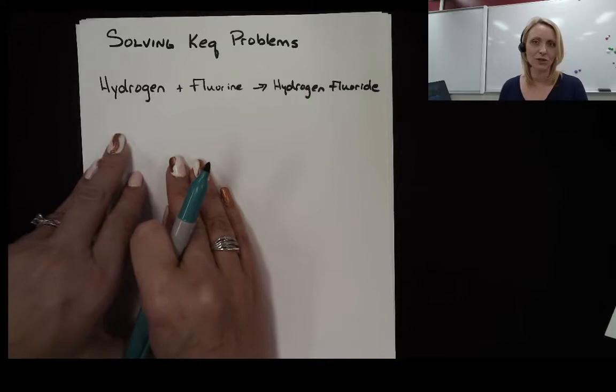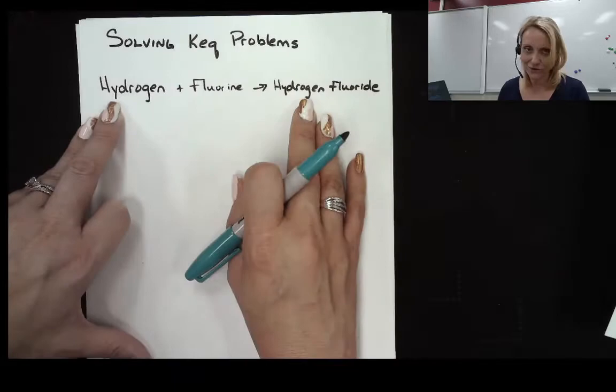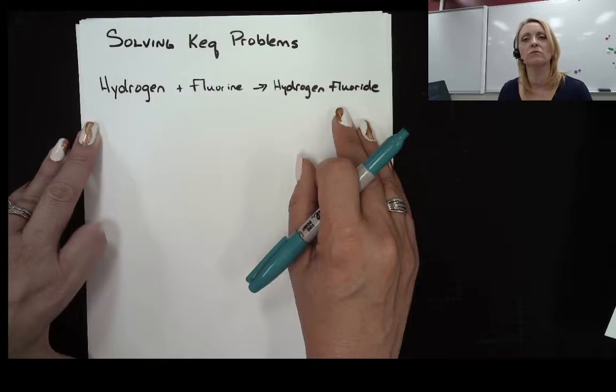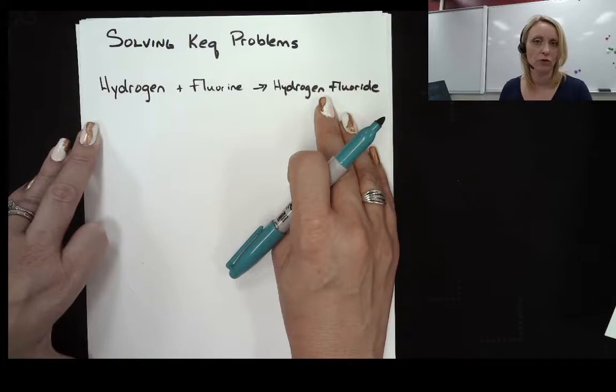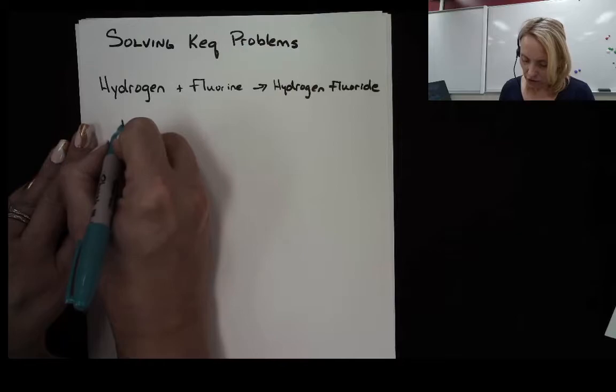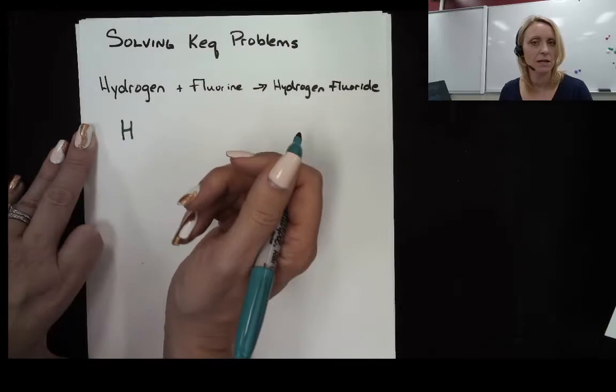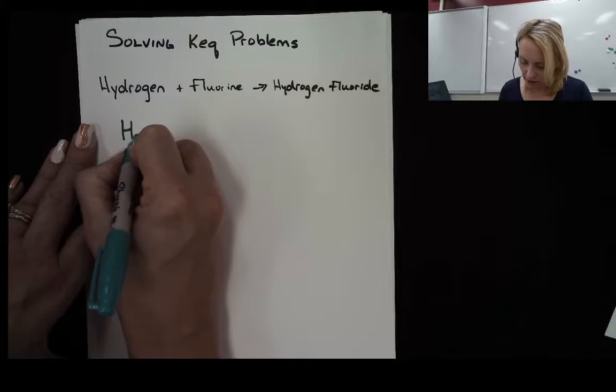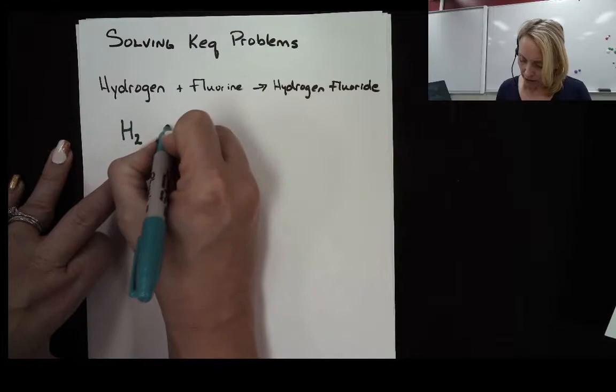This first problem that we're going to look at, we have the word equation for hydrogen and fluorine reacting to make hydrogen fluoride. The first thing we're going to have to do is write this as a balanced equation, which means writing out their chemical formulas. When we have an element like hydrogen, we write the element symbol, and any time we write an element by itself, we have to ask ourselves: is this element diatomic? In hydrogen's case, yes. So if it's diatomic, it comes in a group of two, and we add a little subscript two.